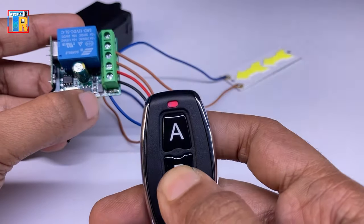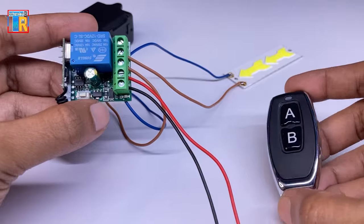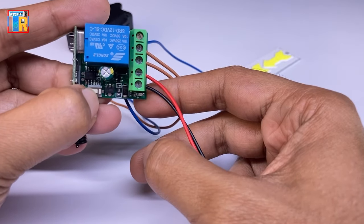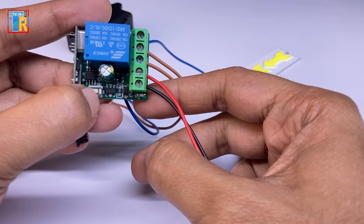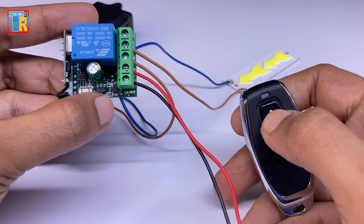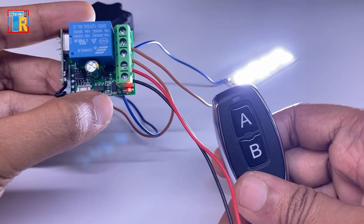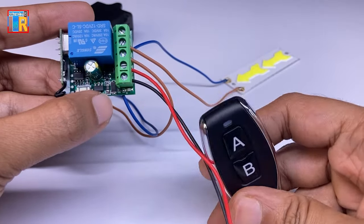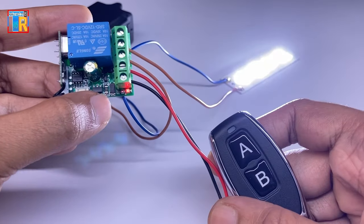Besides these three modes, this module can also function as a delay timer. When pressed four times, the relay will automatically turn off after a five second delay. Pressing it five times sets a ten second delay, and so on.